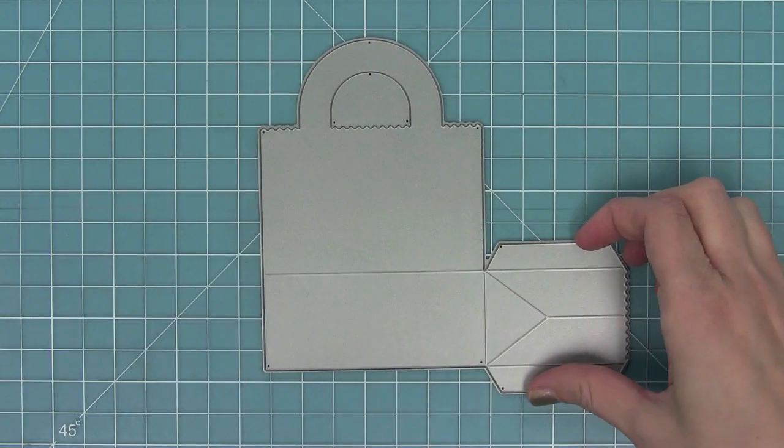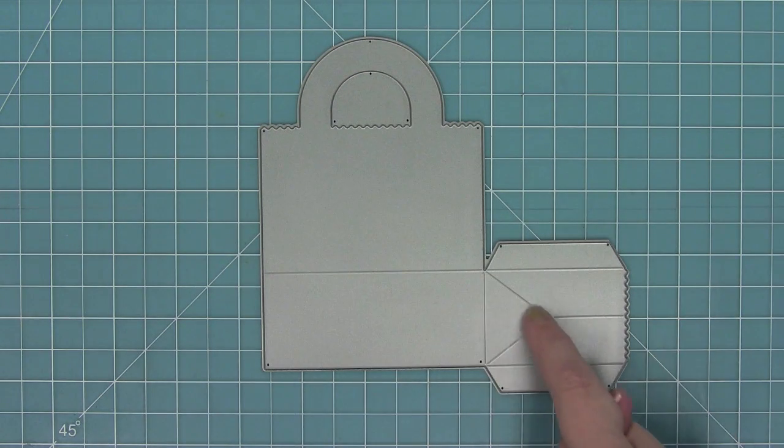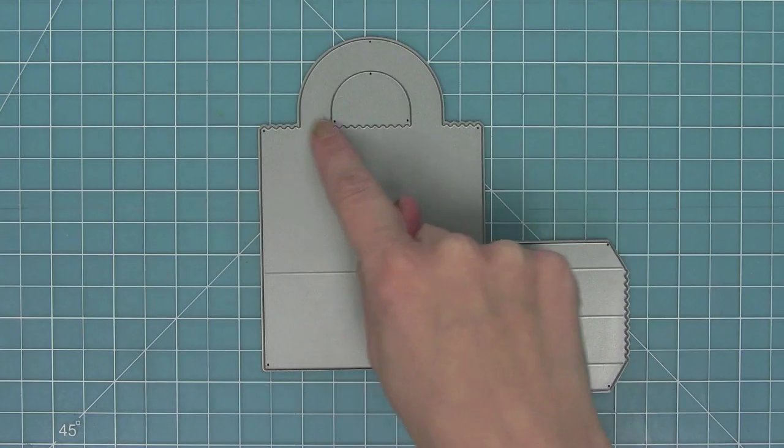Here you can see the die and you can see that there are some embossing lines in the die, and those create your fold lines for assembling the bag, which I'll show you soon.